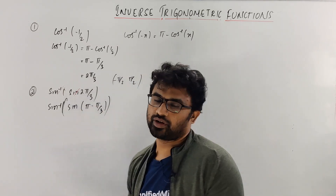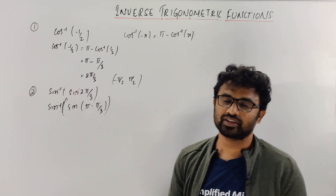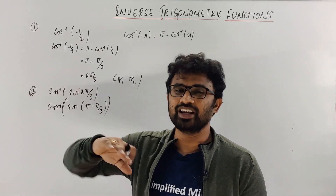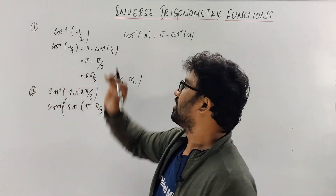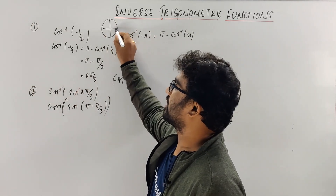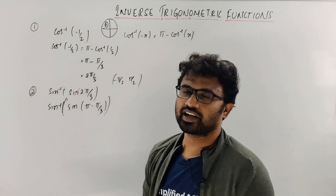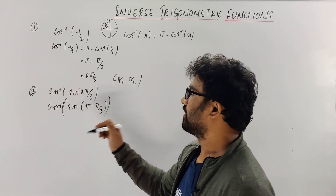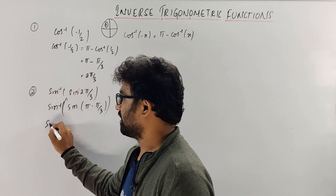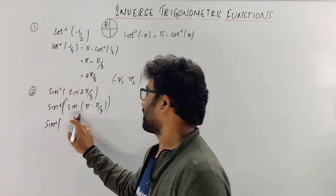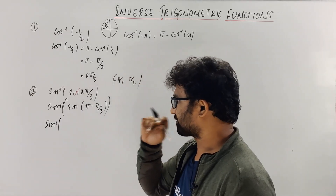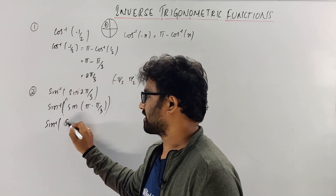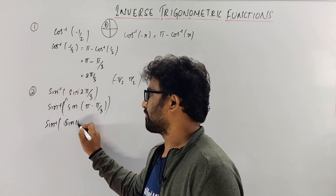After trigonometry, the second quadrant is positive. So we use π − θ for the second quadrant, where sin is positive. We can write sin⁻¹(sin(2π/3)) as sin⁻¹(sin(π − π/3)), which is nothing but sin⁻¹(sin(π/3)).